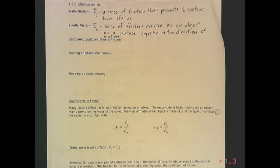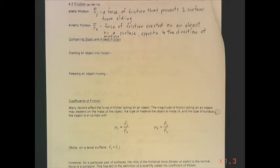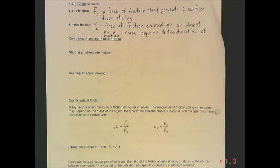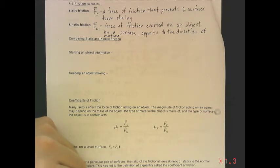We compared static and kinetic friction using the example of a stalled car. The force required to get the stalled car into motion was significantly greater than the force required to keep the car moving. We explained this by stating that the force of static friction is significantly greater in all circumstances than the force of kinetic friction. In order to start an object into motion, a large force is needed to overcome friction.